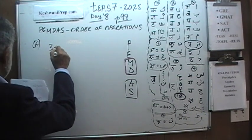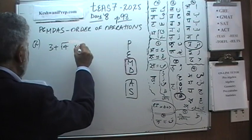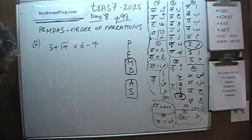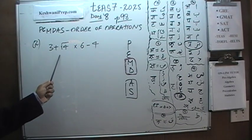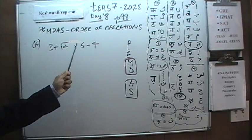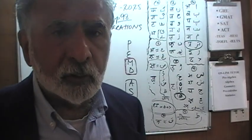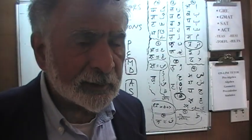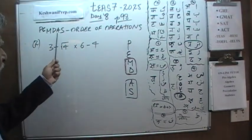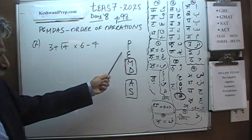3 plus root of 4 times 6 minus 4. As you can see, we have several operations here: addition, multiplication, subtraction, and then we have this root sign. We will talk about that in a second. So we are discussing the topic of order of operations, and the operations must be performed in a specific order.